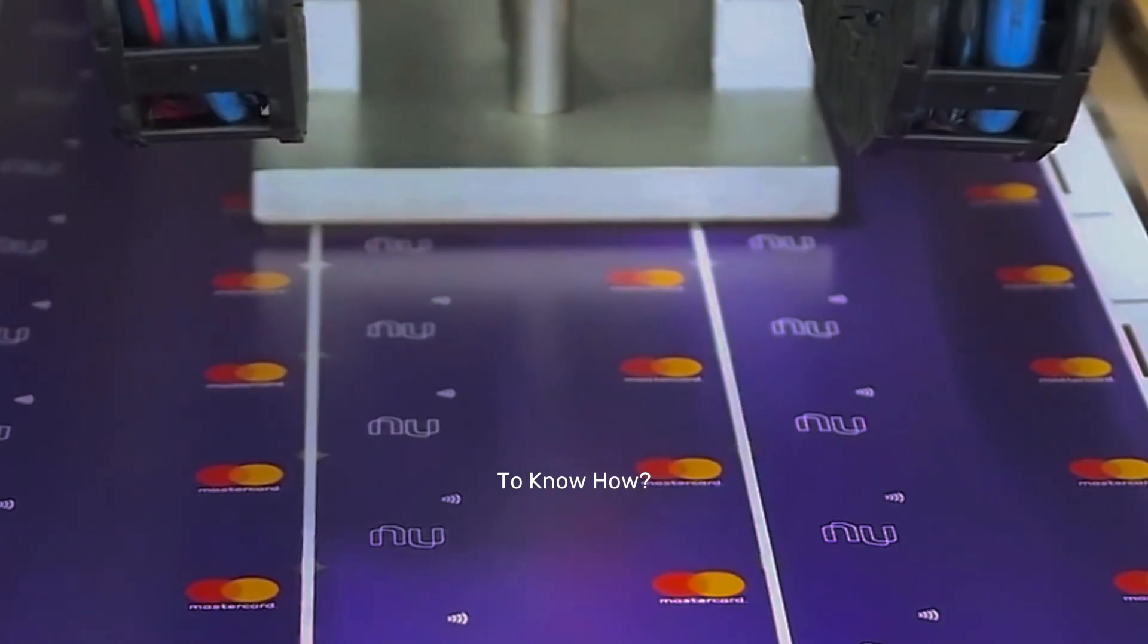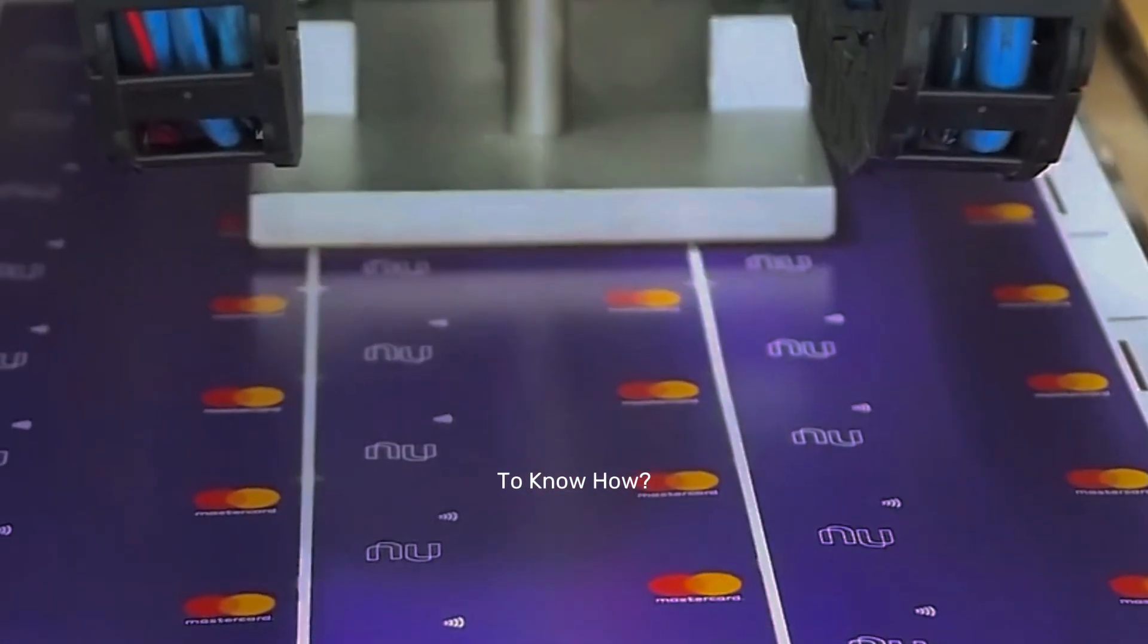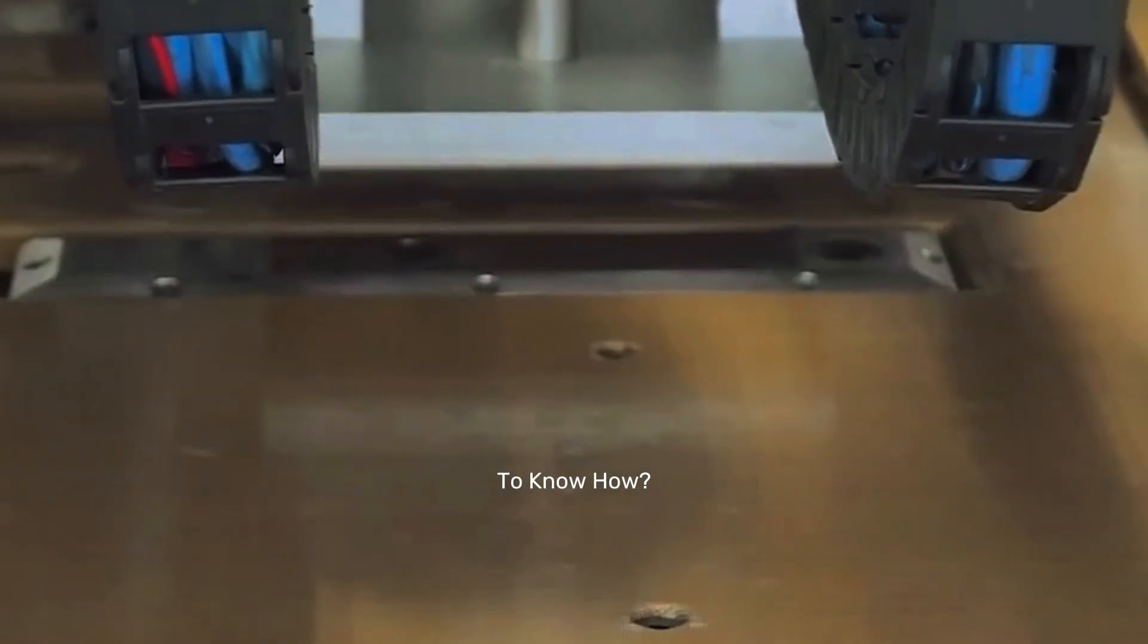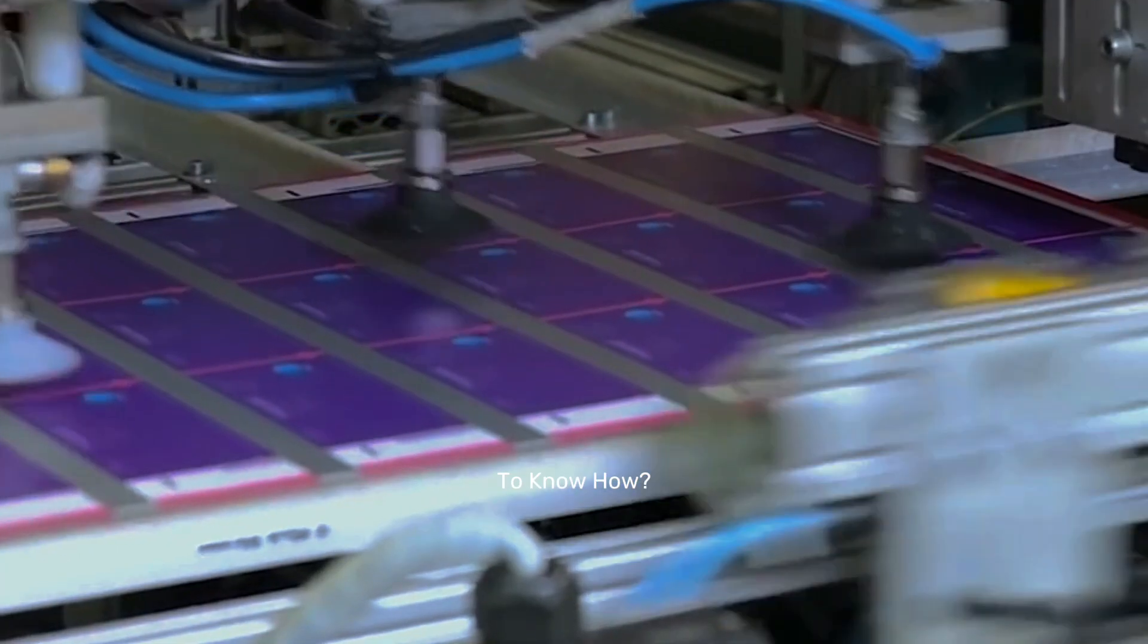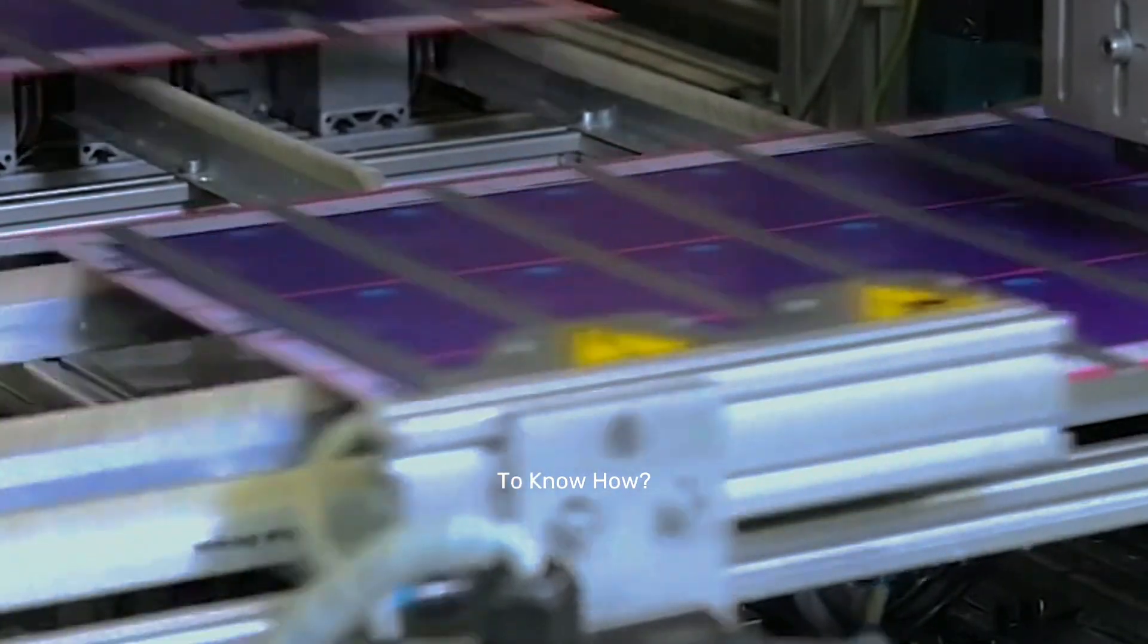Now one of these printed layers is placed on the face of each PVC sheet. Using ultraviolet technology, these two become a single unit.